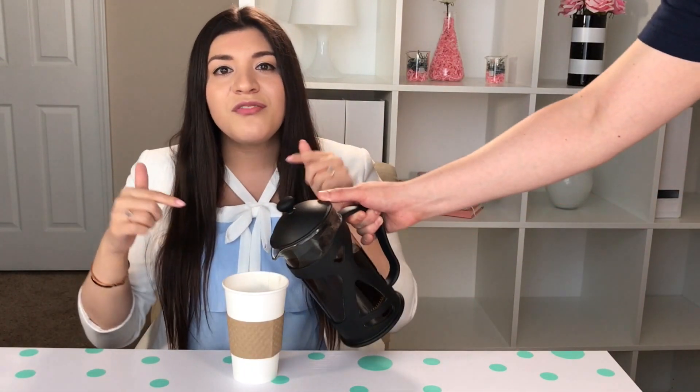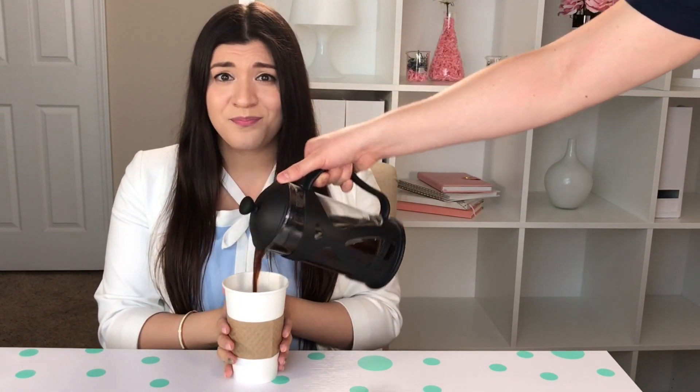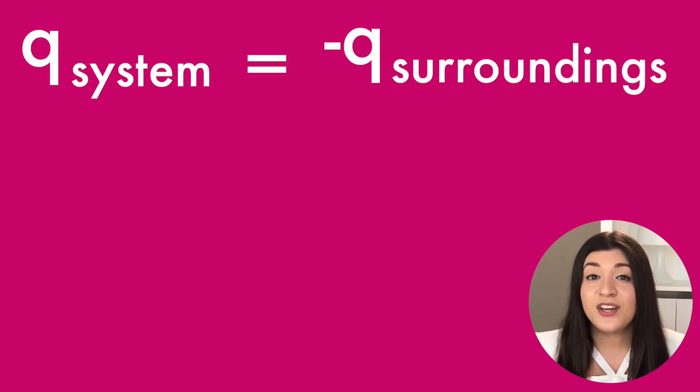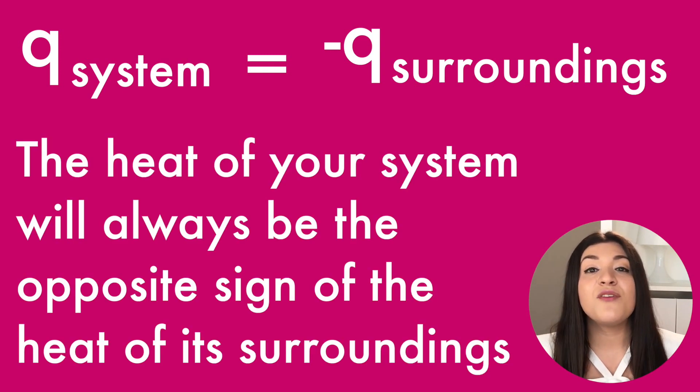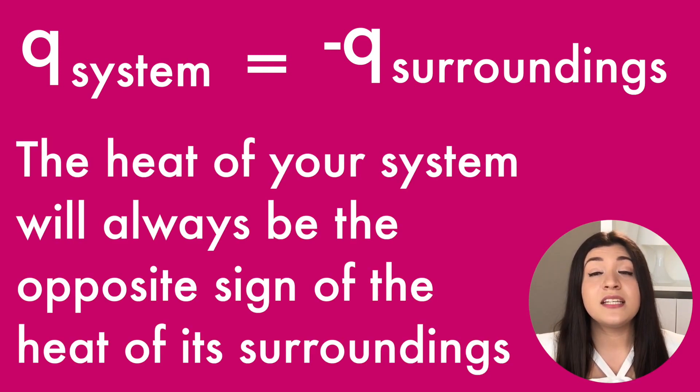So say if we were to pour our hot coffee into our cup, then the cup becomes warm — that makes sense. The cup is now warm because that hot coffee is releasing its heat to the cup. So your system is releasing its heat to its surroundings. We can say that Q of our system is equal to the negative Q of our surroundings — Q just refers to heat. The heat of your system will always be the opposite sign of the heat of its surroundings.